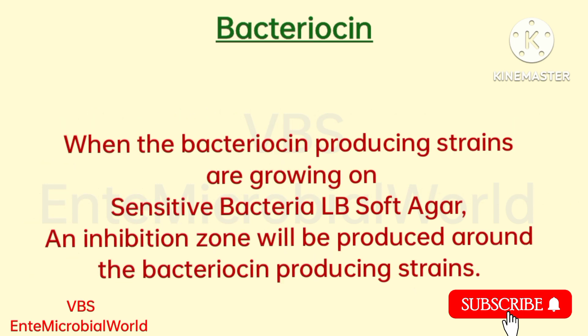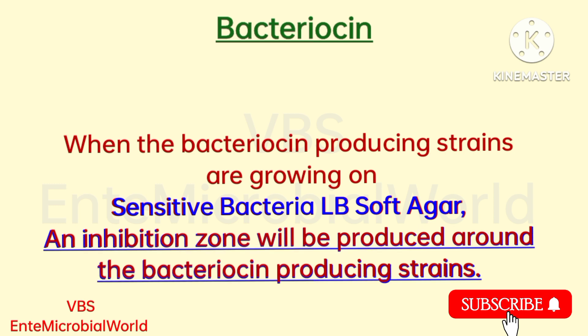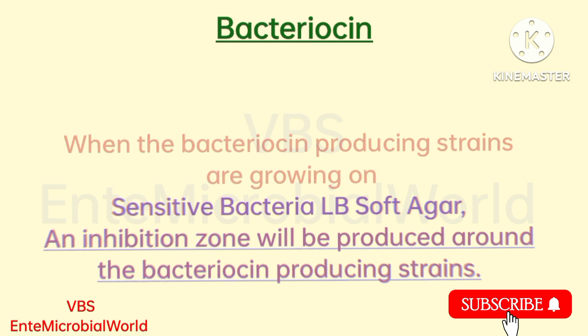When the bacteriocin producing strains are growing on sensitive bacteria LB soft agar, an inhibition zone will be produced around the bacteriocin producing strains.